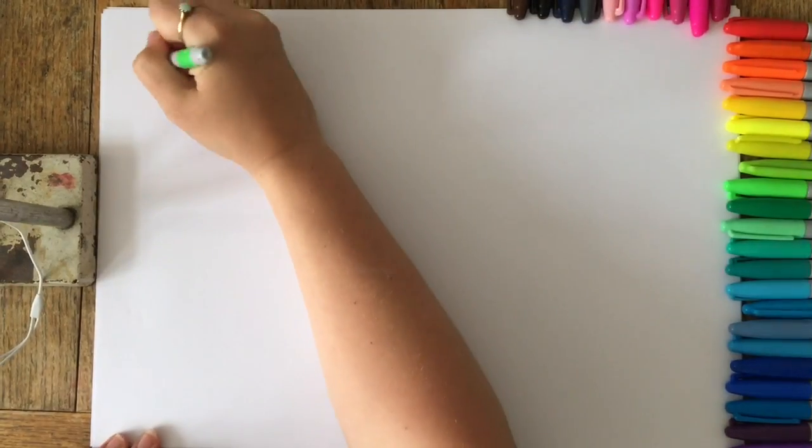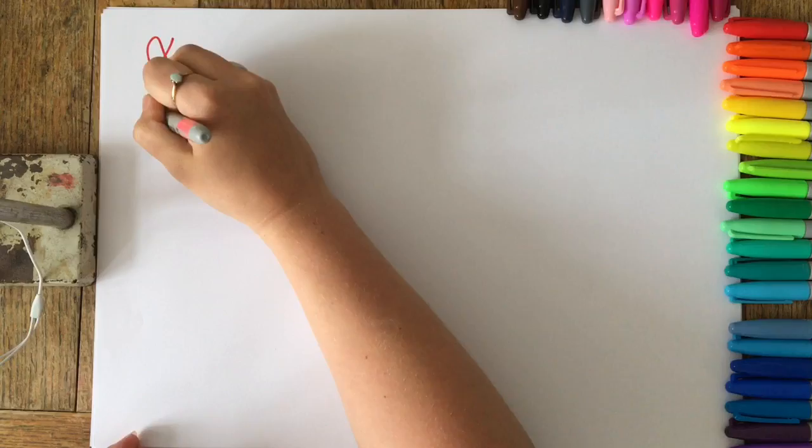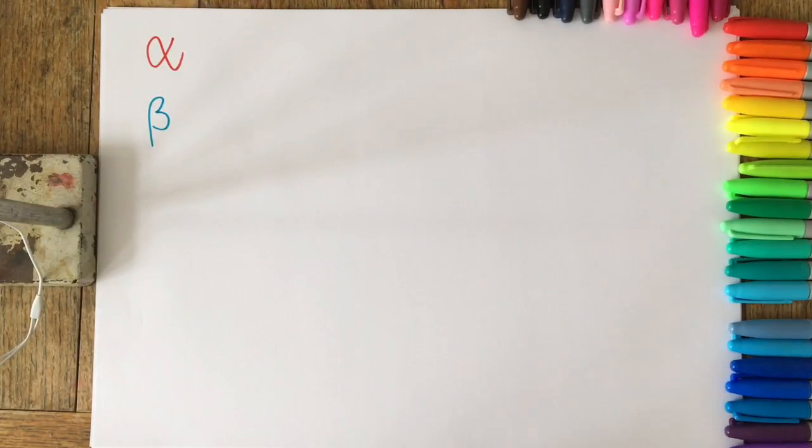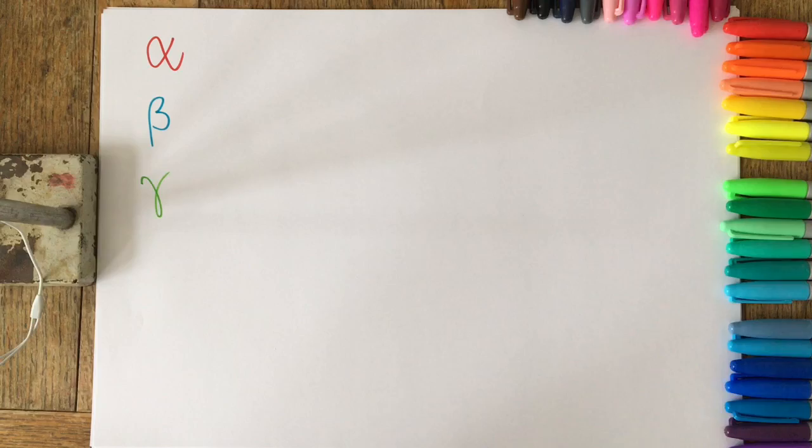This video is a summary of ionizing radiation. We're going to talk about alpha, beta, and gamma radiation, their properties, and then monitoring badges.